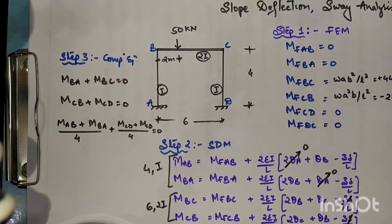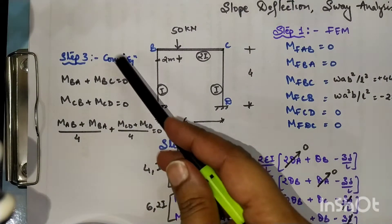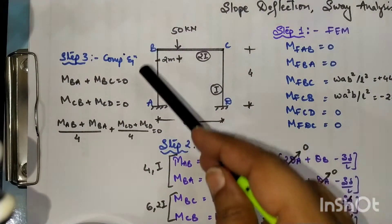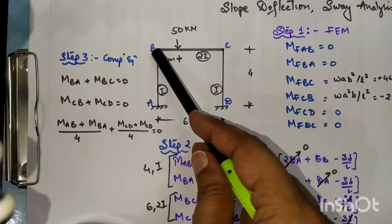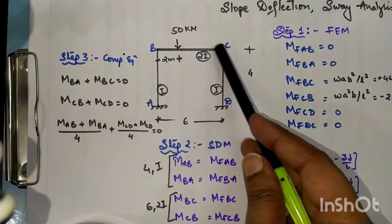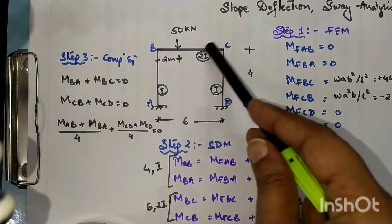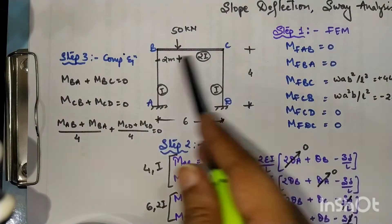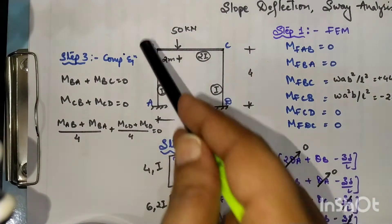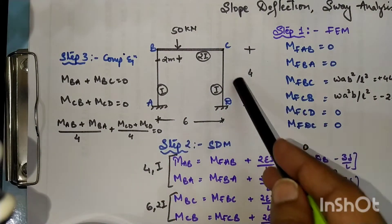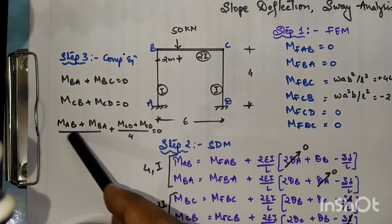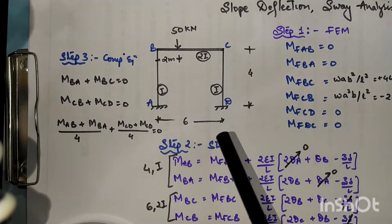Next is our compatibility equation. In this question we have three unknowns: theta B, theta C, and delta. For three unknowns we need three equilibrium or compatibility equations. At supports left side and right side, moment has to be equal to zero. Vertical members, we have to include delta value.